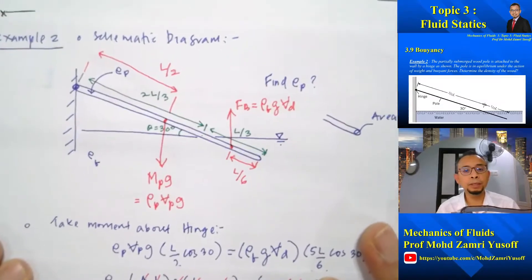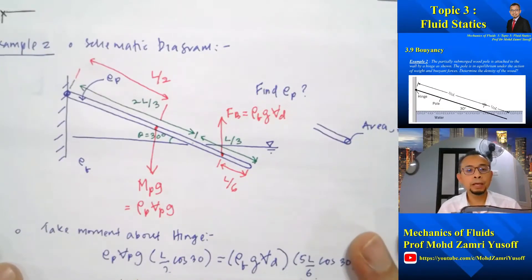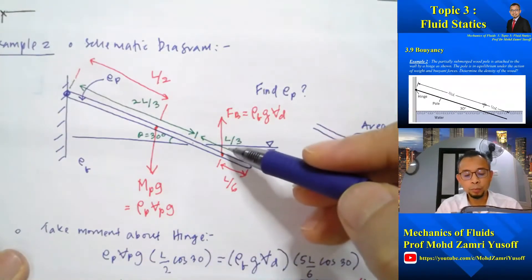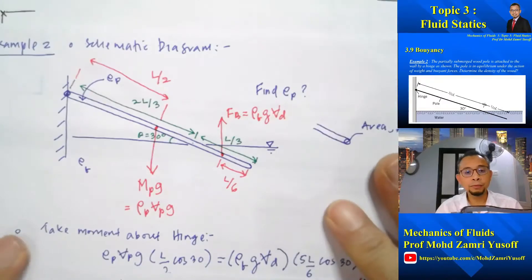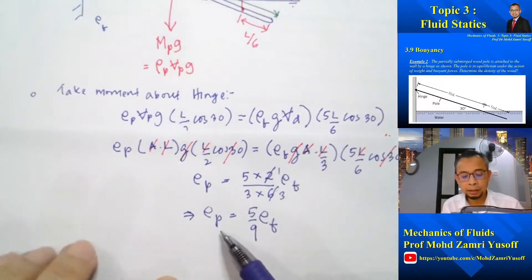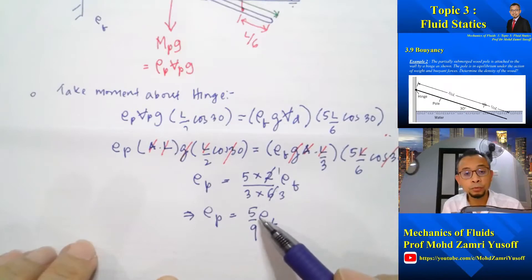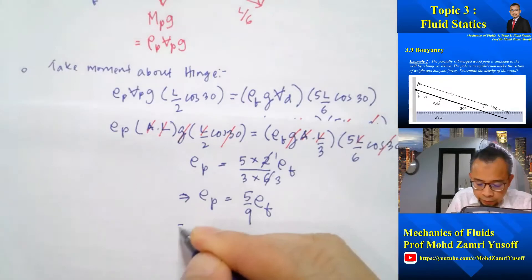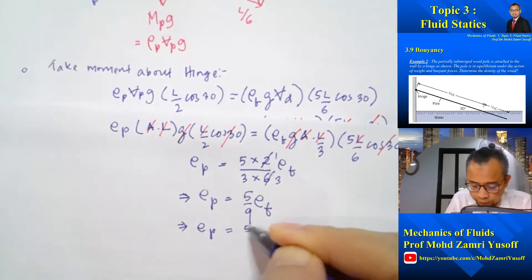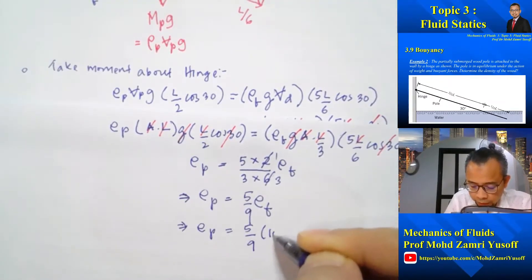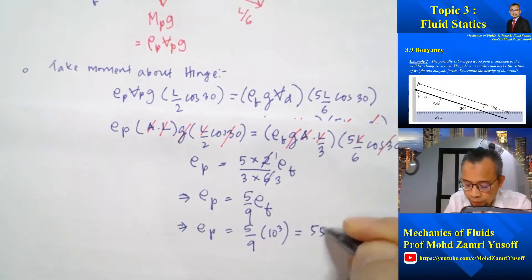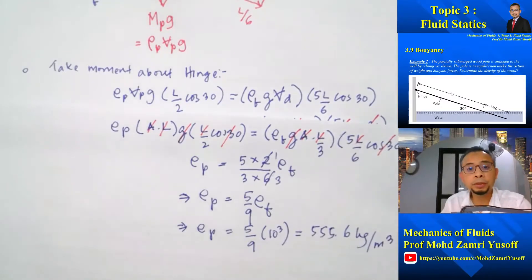So to summarize, we balanced the moment about the hinge due to the weight and the moment due to the buoyancy force, and that gives us the density of the pole equal to 5/9 of the density of the fluid. Substituting ρ_fluid = 1000 kg/m³, the density of the pole is 555.6 kg/m³.